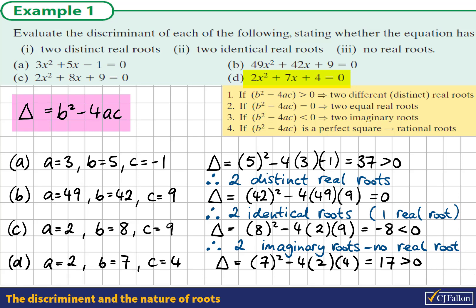Since 17 is greater than 0, this would mean that we would be getting two answers in the quadratic formula — two real answers. So we get two distinct real roots.